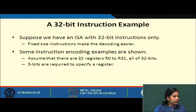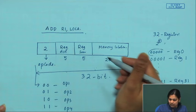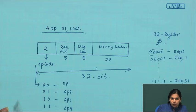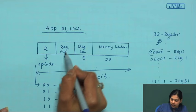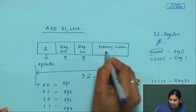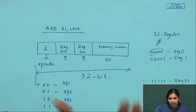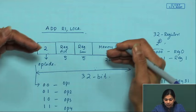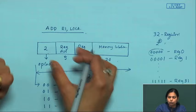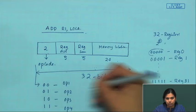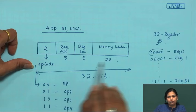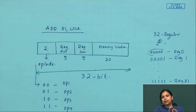Fixed-size instructions make decoding easier because you already know that the first 2 bits are the opcode, the next bits are the registers, and the remaining 20 bits are the memory location. Since all these bit positions are fixed in advance, the decoding task becomes much easier.